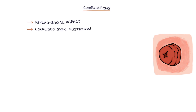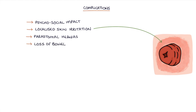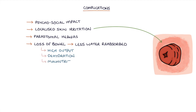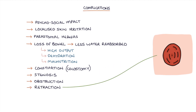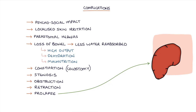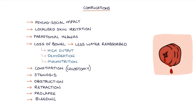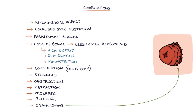Let's talk about the complications of stomas. Stomas have a number of possible complications. There's a significant psychosocial impact. There can be localised skin irritation. Parastomal hernias can form with weakness in the abdominal wall around the hernia and bulging of the abdominal contents. Loss of bowel length distal to the stoma means there's less water reabsorbed from the stools, which can lead to a high output from the stoma, dehydration and malnutrition. Patients can develop constipation with stomas, particularly with colostomies. There can be stenosis of the stoma, obstruction, retraction where the stoma sinks into the skin, prolapse where the bowel telescopes through the hernia site, bleeding, and granulomas which cause raised red lumps around the stoma.